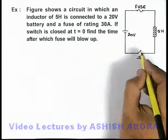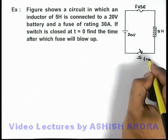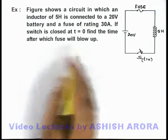Now it is saying if the switch is closed at t equal to zero, we are required to find the time after which fuse will blow up.